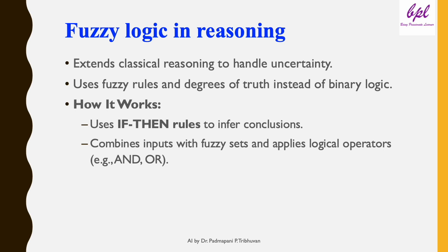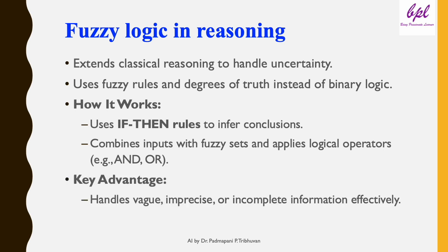Even if temperature is 70% high and humidity is 80% high, fuzzy reasoning will proportionately calculate the fan speed, blending these inputs smoothly. One of the biggest advantages of fuzzy reasoning is its ability to deal with vague or incomplete information, making it ideal for solving complex real-world problems.